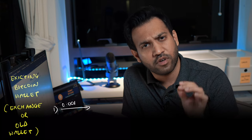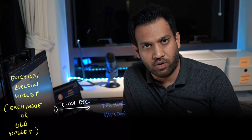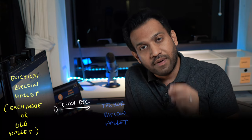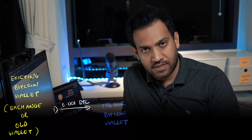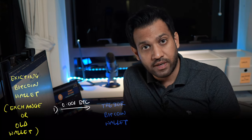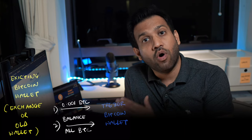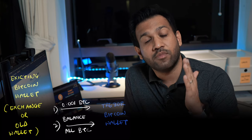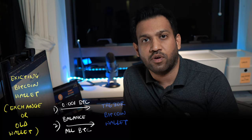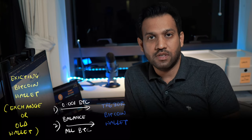Typically, if you have purchased Bitcoins on an exchange, you would first send a test transaction to this wallet for a small amount of Bitcoin. Once you receive this transaction in this wallet, you would then go ahead and send all your Bitcoins from your exchange Bitcoin wallet to this wallet.